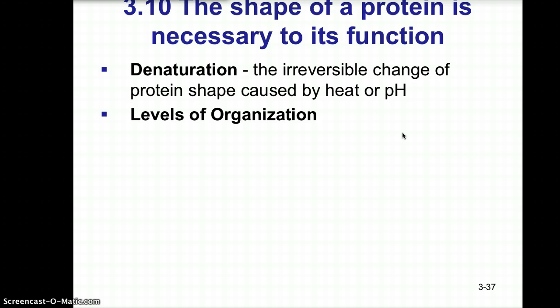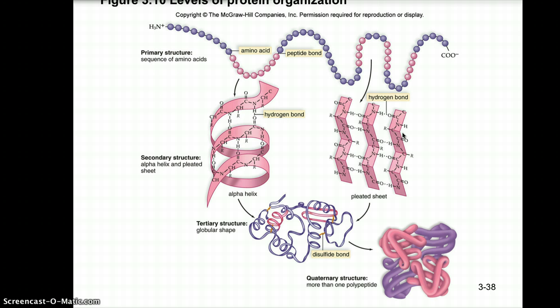The levels of protein structure are as follows. The primary level is a sequence of amino acids bonded together — think of it like a bead or pearl necklace. The secondary level is when hydrogen bonding between amino acids causes the polypeptide to form an alpha helix or a pleated sheet — like a slinky or spiral staircase, or amino acid chains held together in a pleated sheet.